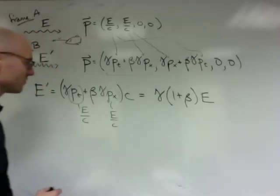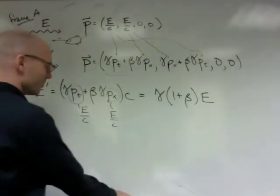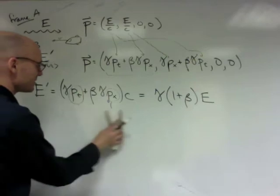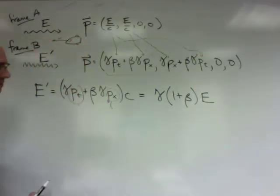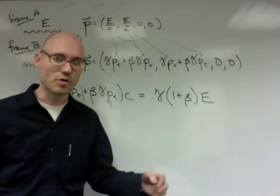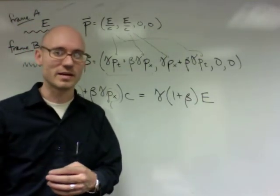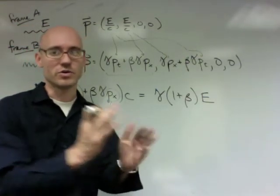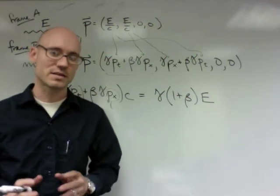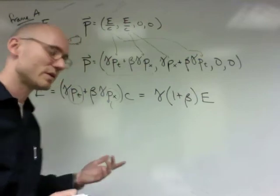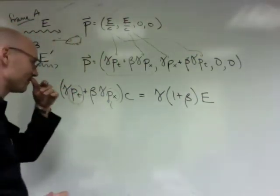So the energy of the photon is a function of your frame, as you expect, for all sorts of reasons, which I'm happy to discuss offline. After all, the bullet hurts more if you run into it than you run away from it. Either way, the bullet has different energies and different momentum in different frames. Similarly here, the photon has different energies in different frames.